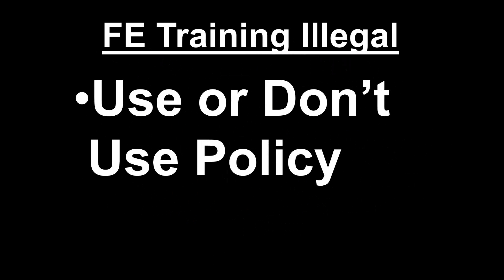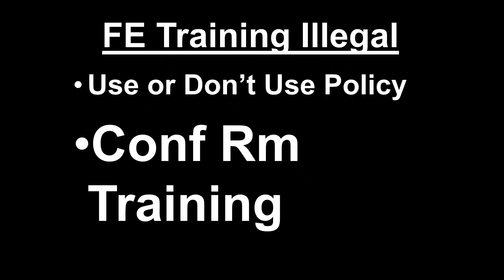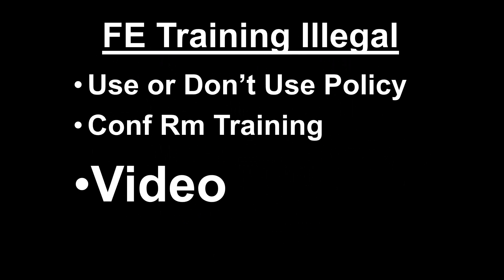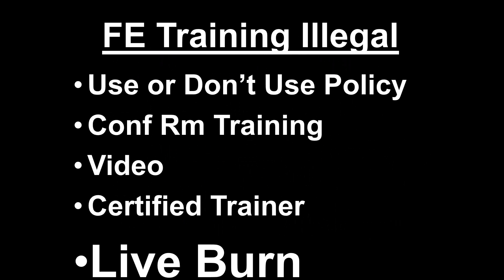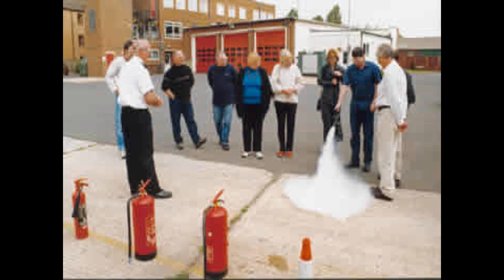Fire extinguisher training is a common mistake — it is illegal unless done properly. You must have a use-or-don't-use policy, and whichever you choose, train accordingly. If you want employees trained to use fire extinguishers, you must put them in a conference room, show them the approved video, use a certified trainer, and take them outside for a live burn — and this must happen every year per OSHA. If you haven't done this, you don't have trained people, and if you've told them to use extinguishers, you're not in compliance.